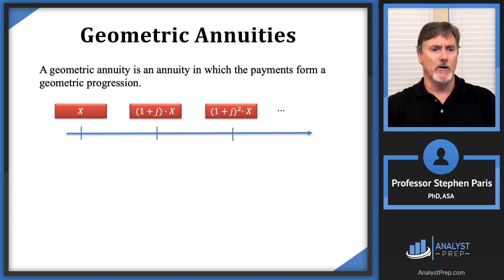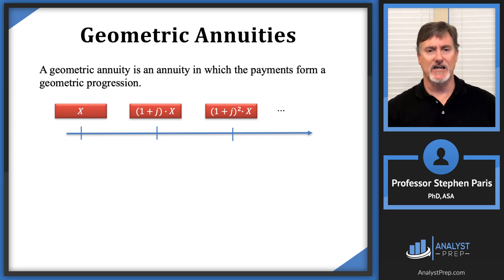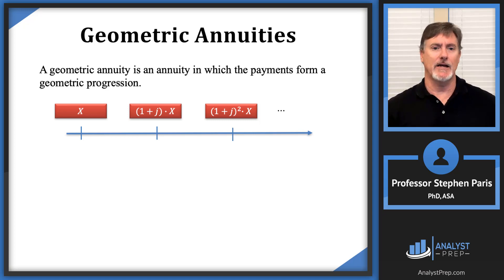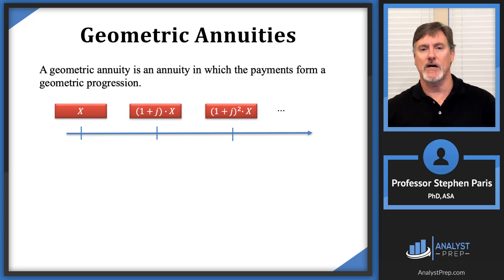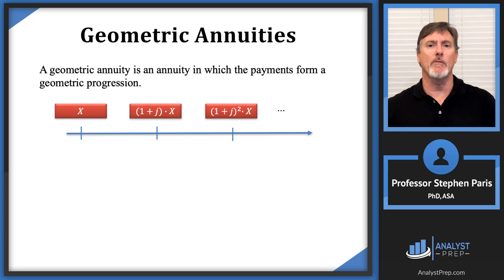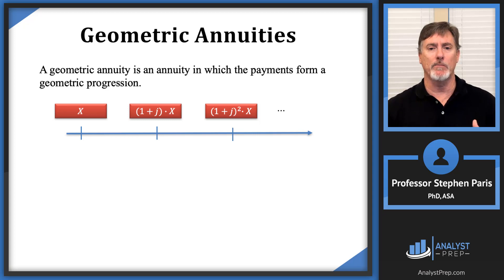On this slide, the first payment is X. The next payment would be (1+J) times X, and then the next payment would be (1+J)² times X. So these payments form a geometric progression with the common ratio being (1+J).